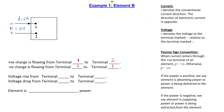Next, let's look at ideal basic circuit element B as shown. For this circuit element, the current value and direction is actually the same as that for ideal basic circuit element A. Thus, the positive and negative charge flow directions are shown here, and these are the same as before.